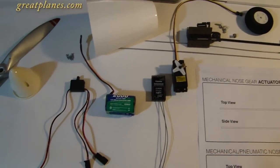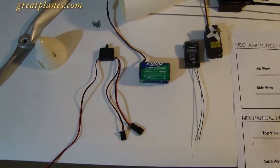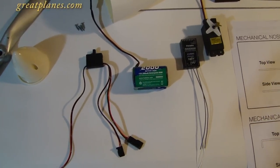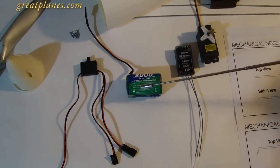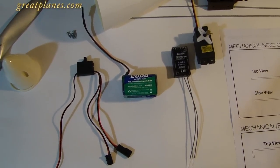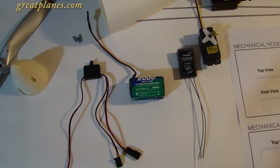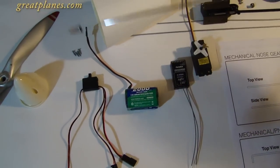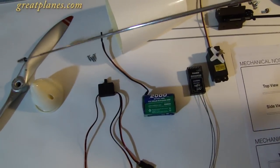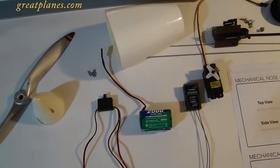The receiver that we've selected for our Dirty Birdie is the 8 channel Futaba R2008SB 2.4 GHz receiver. Our battery pack that's going to power our airplane is the Hydromax 2000 milliamp nickel metal hydride battery, a 4.8 volt. We have our receiver switch and our nose spinner.